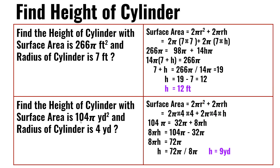Find the height of a cylinder with a surface area of 204π yards squared and a radius of 4 yards. 2π×4×4 + 2π×4×h. 2π×4×4 is 32π. 2π×4×h is 8πh. So 204π = 32π + 8πh. 8πh = 204π − 32π = 72π. 72π divided by 8π equals 9 yards.